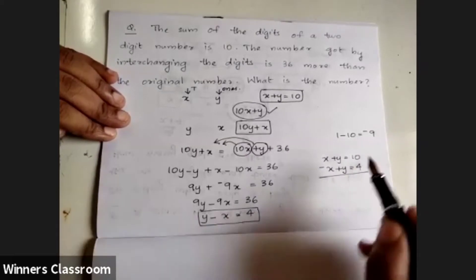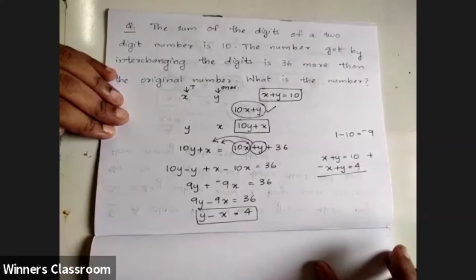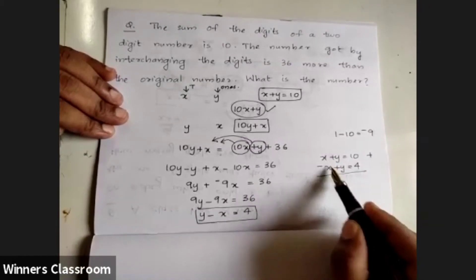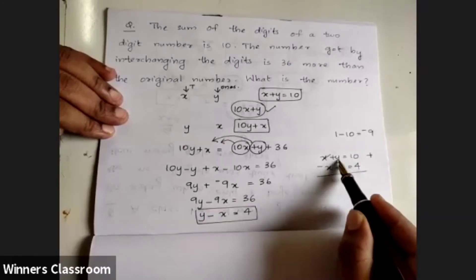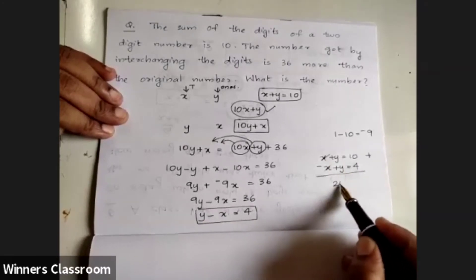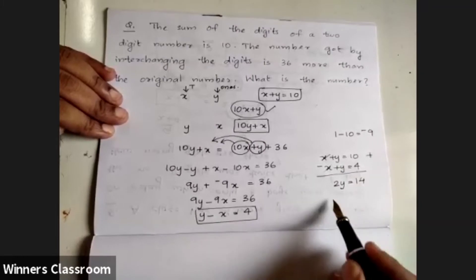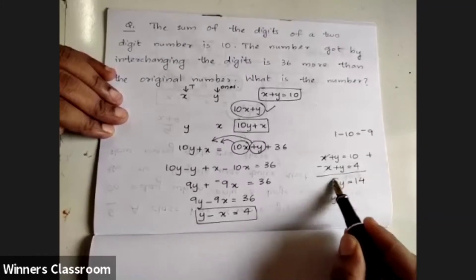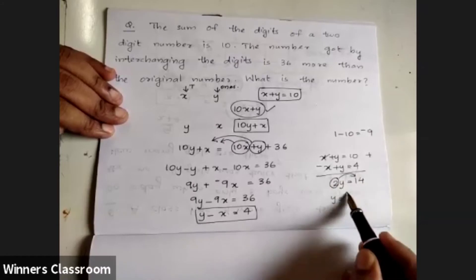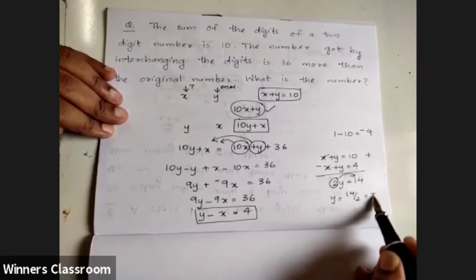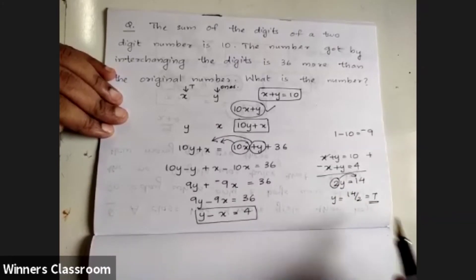Let's add these equations. x plus minus x cancel, and y plus y equals 2y. 10 plus 4 equals 14, so 2y equals 14. Therefore y equals 7.